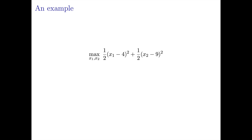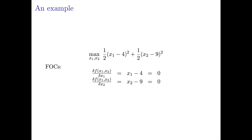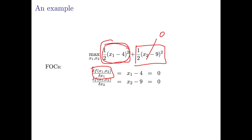Let's do an example. Here's our function that we're trying to maximize. It's a function of two variables, x1 and x2: negative one-half times x1 minus 4, squared, plus negative one-half times x2 minus 9, squared. We want to choose x1 and x2 that gives us the highest value. The first-order conditions are the partial derivatives with respect to each variable. The partial derivative with respect to x1, treating x2 as a constant, gives us one-half times 2 times x1 minus 4. The 2 and the one-half cancel, leaving us with x1 minus 4.